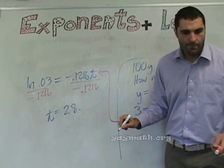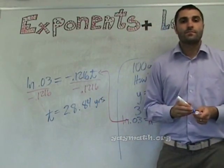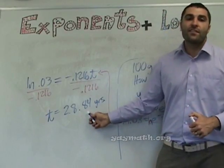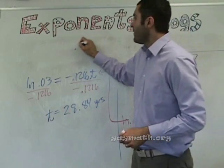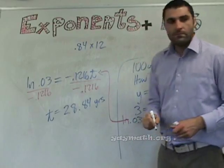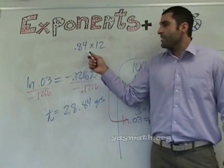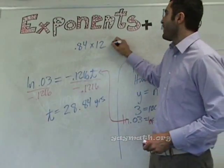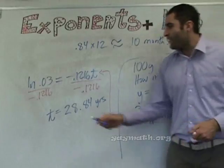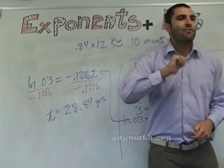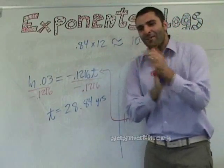So 28.84 years — the 0.84 of a year is 0.84 times 12, which is about 10 months. So it's around 28 years and 10 months — roughly October of the 29th year. We have 3 grams of cobalt-60 left.